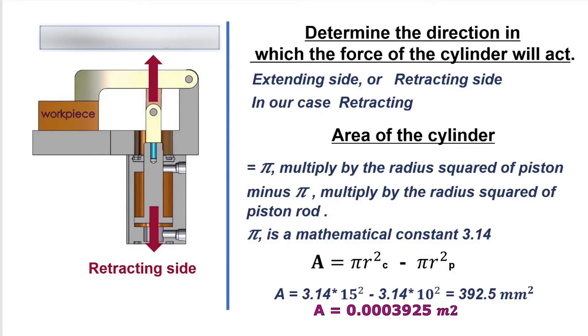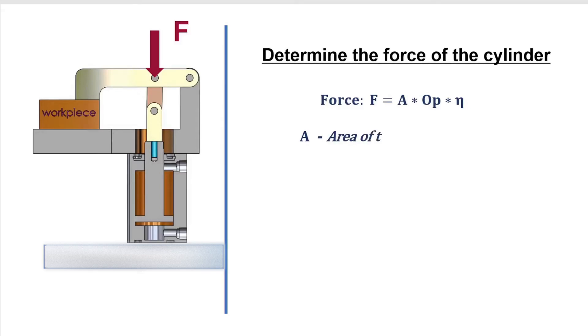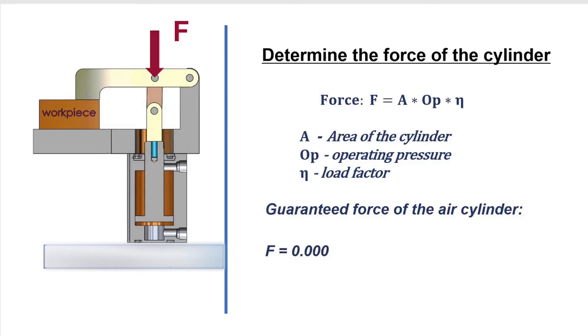A equals 0.0003925 meters squared. Determine the force of the cylinder. The cylinder force F equals area of the cylinder times operating pressure times factor. Guaranteed force of the air cylinder equals 112.1 Newtons.